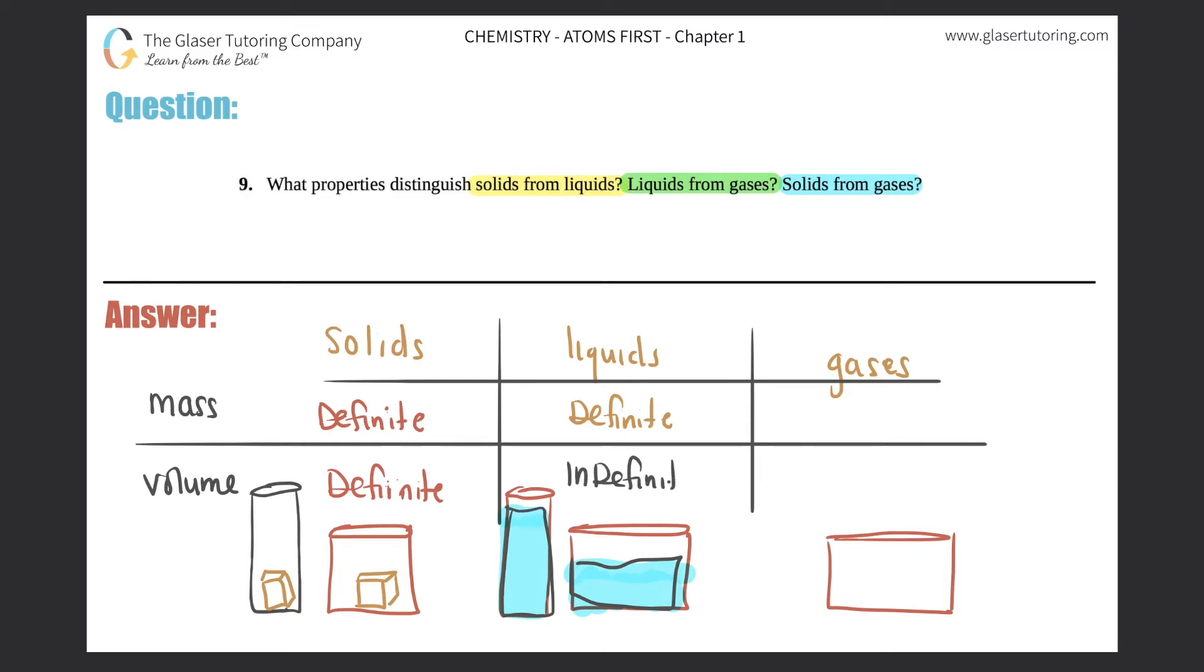Last but not least we have gases. Now gases are tricky because we can't see them at all. So they're all over the place, right? They're these little atoms and molecules that are bopping around all over the container, and we have no idea which direction they're going. They're colliding all over the place. So that can kind of give you a hint as to what's going to happen with the mass and the volume.